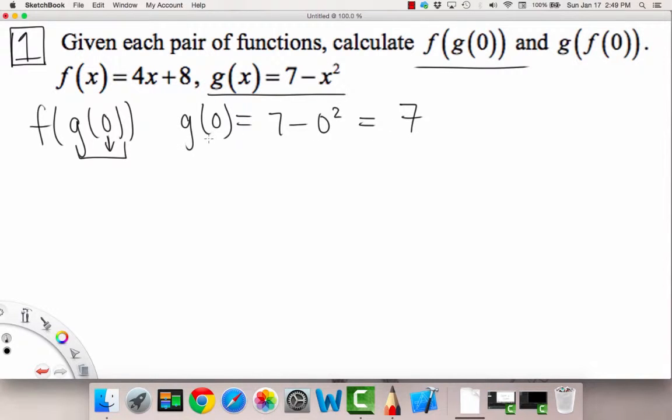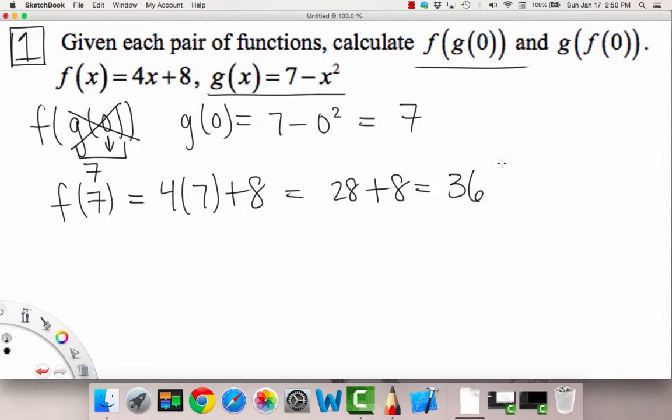Now that we know g of 0 is equal to 7, we can just plug in a 7 in place of this g of 0. So now we get that our actual problem is f of 7. We just figure this out by plugging in 7 for the formula for f. This would give us 4 times 7 plus 8, which gives us 28 plus 8, which gives 36 as our answer. So 36 is equal to f of g of 0.